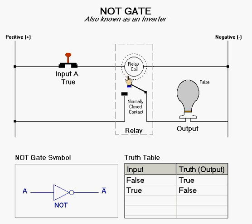This represents the magnetic field that is created by the energized coil. This magnetic field then opens the normally closed relay contact, causing the light bulb to go dark, representing the output of false.